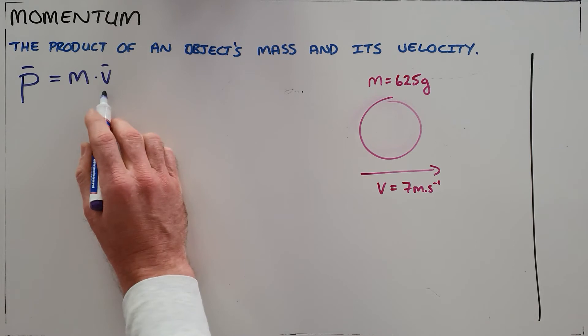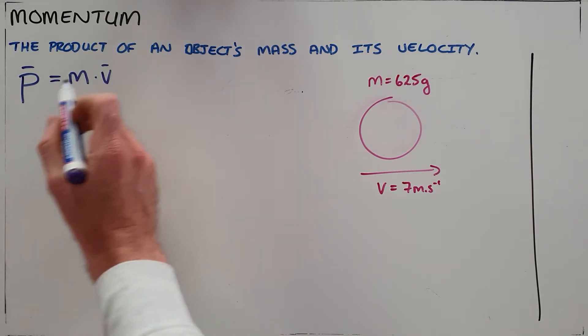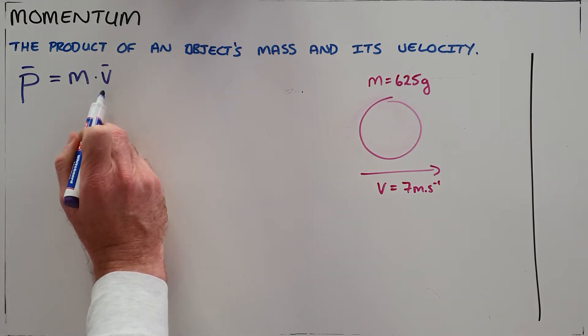We need to remember that velocity is a vector, which means that momentum is also going to be a vector that has the same direction as the velocity of that object.